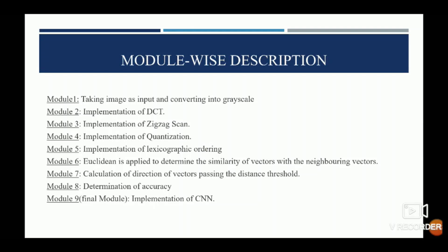Module-wise description: Module 1 is taking an image as input and converting it to grayscale. We take an image we want to test — whether it is forged or not — and convert it to grayscale. Module 2 is implementation of DCT, used to separate images into parts of differing importance. Module 3 is zigzag scan, used to differentiate the higher energy coefficients from the lower energy coefficients.